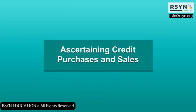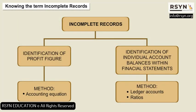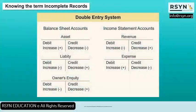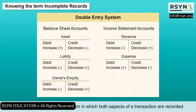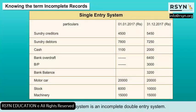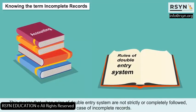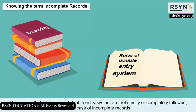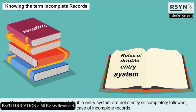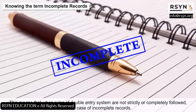Ascertaining Credit Purchases and Sales: The double entry system is a system in which both aspects of a transaction are recorded. However, the single entry system is an incomplete double entry system — this means that when rules of double entry system are not strictly or completely followed, it is a case of incomplete records.